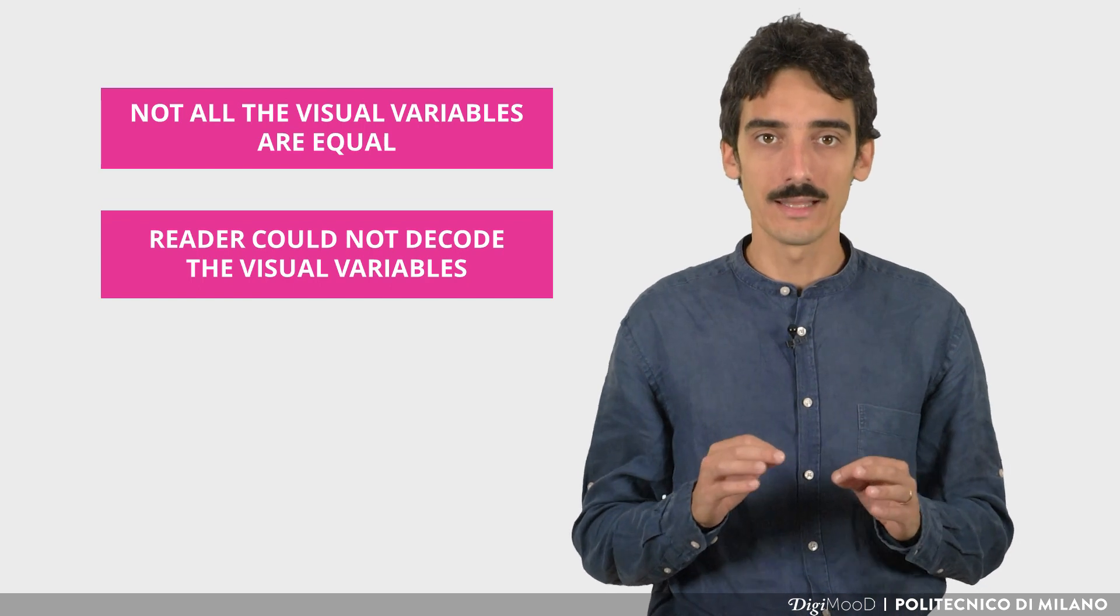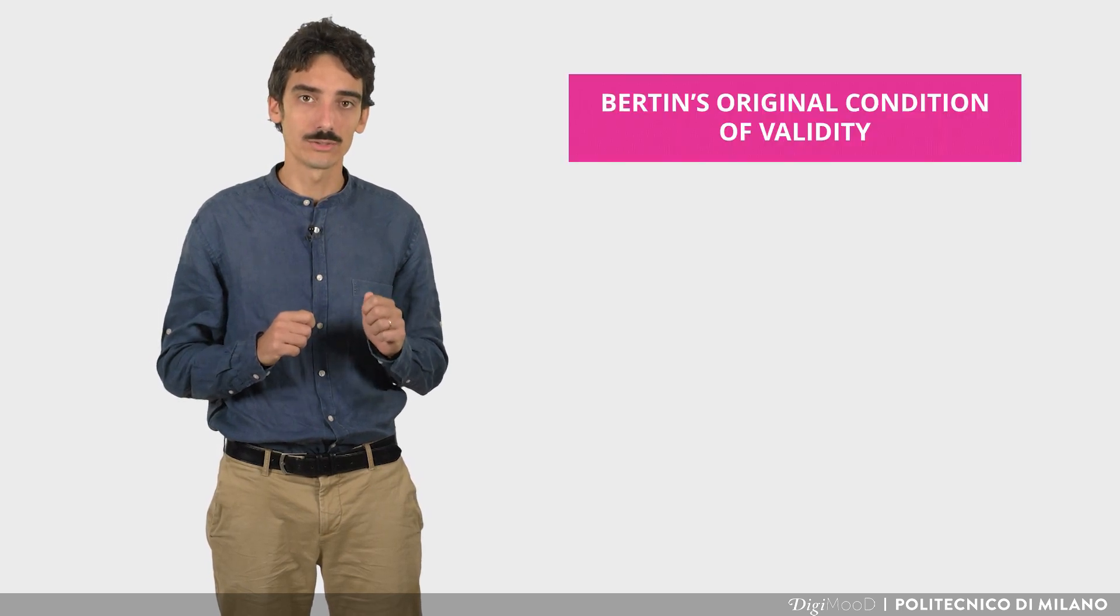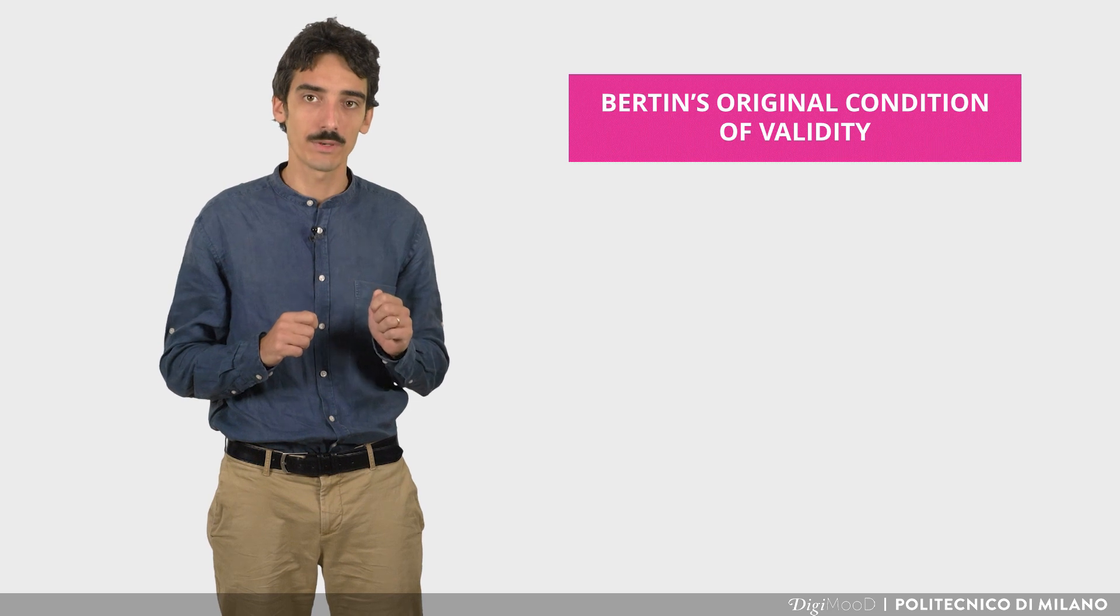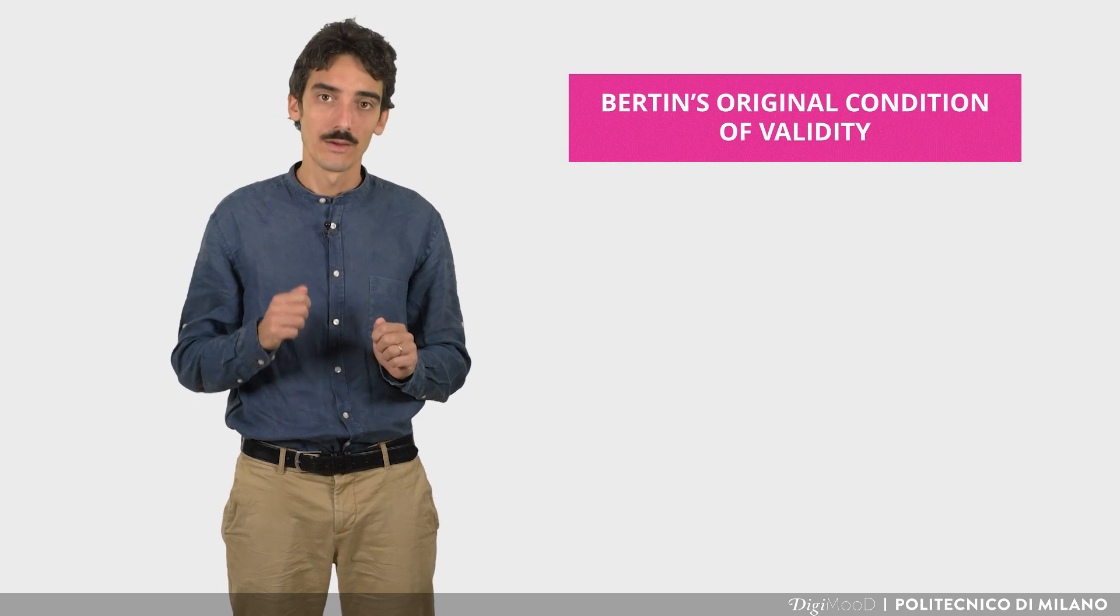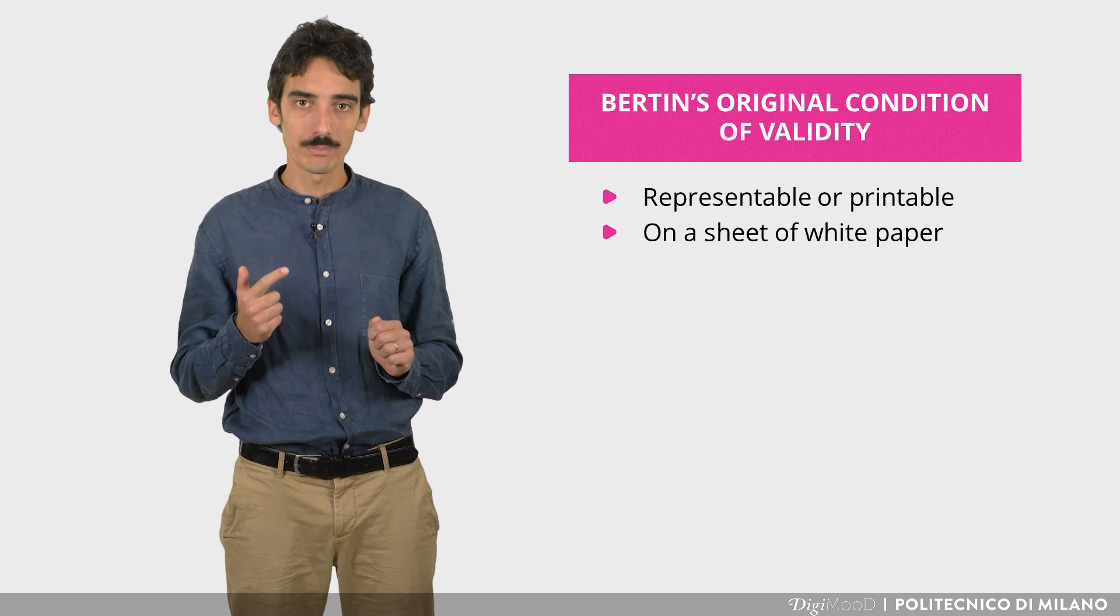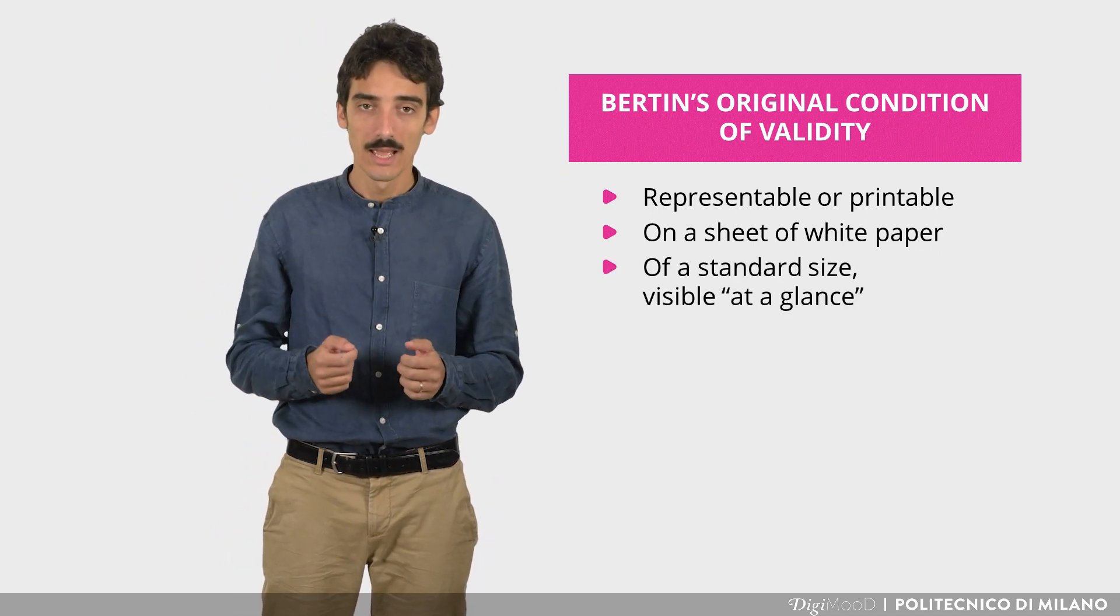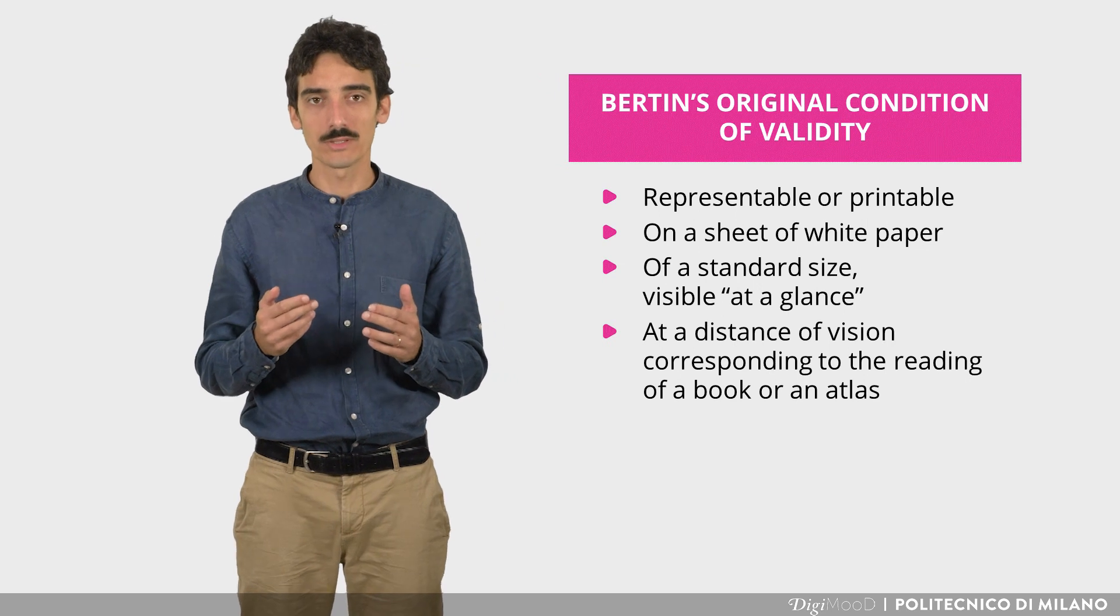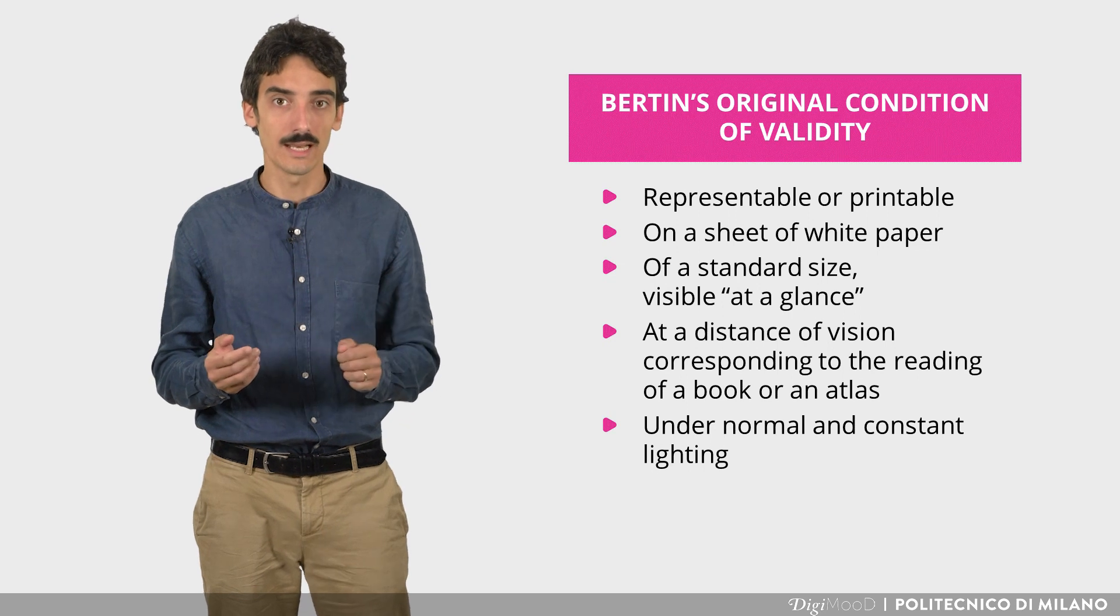To conclude, it's worth remembering that Bertin also stated that the visual variable's properties are valid under specific conditions. Representable or printable on a sheet of white paper, of a standard size visible at a glance, at a distance of vision corresponding to the reading of a book or an atlas, under normal and constant lighting.